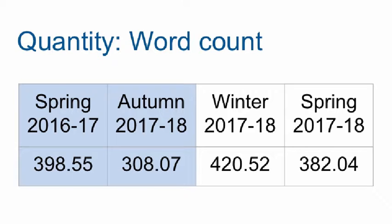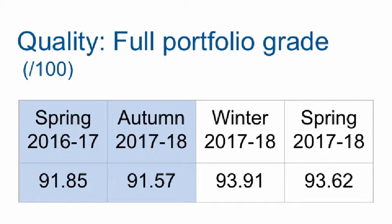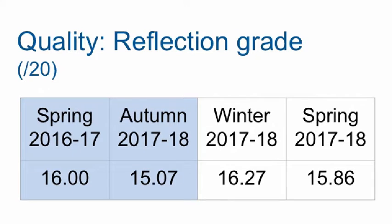Looking at outcomes: did they write more or less? Not really — it's only four quarters' worth, so not a good indicator on quantity. Moving towards quality: looking at the full portfolio grade out of 100, there's a slight uptick in the two quarters where the multimodal reflection was used. But I don't think multimodality of the reflection was a key factor, because the grade for that element out of the rubric didn't really change. The whole impetus for this was that this element always came out as the weakest link in their overall grade, which is why I wanted to tackle it differently.